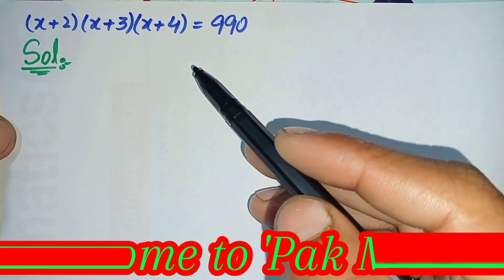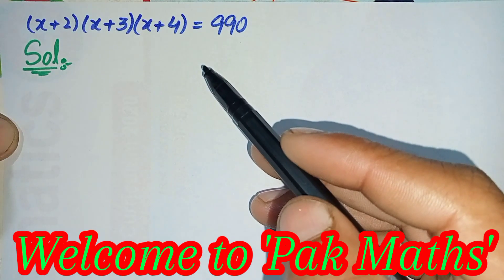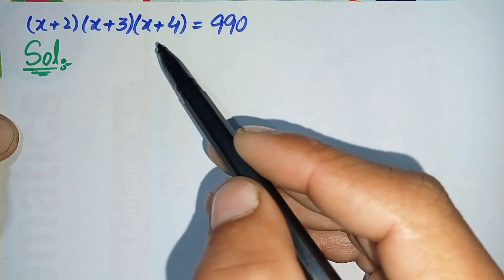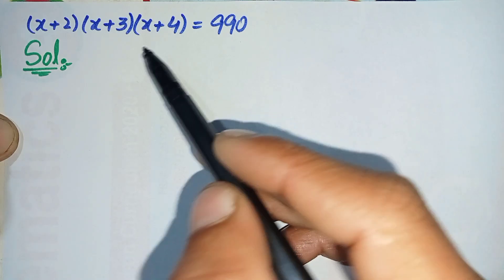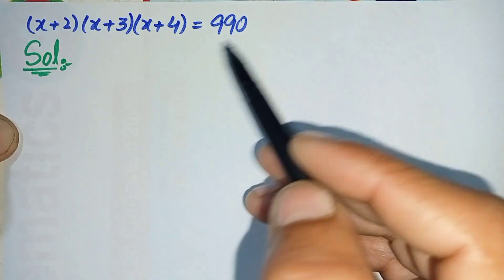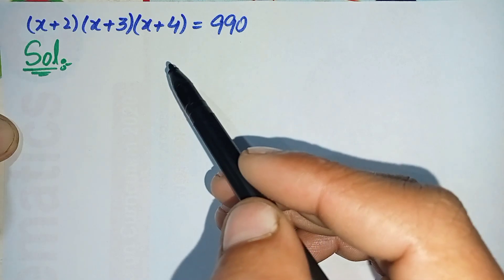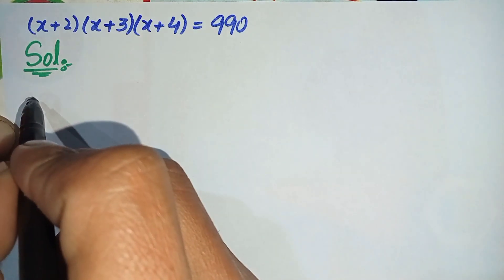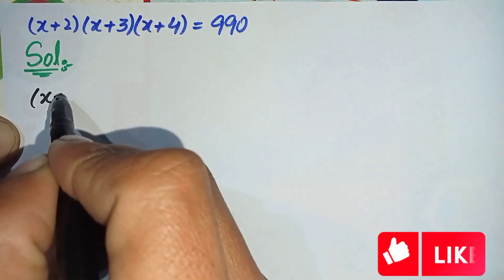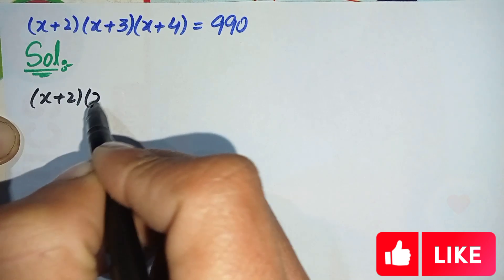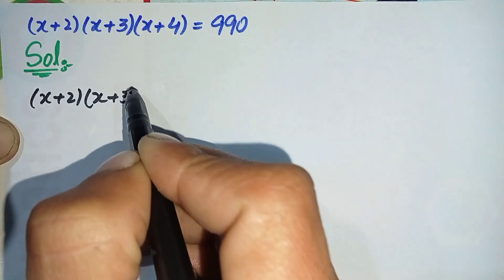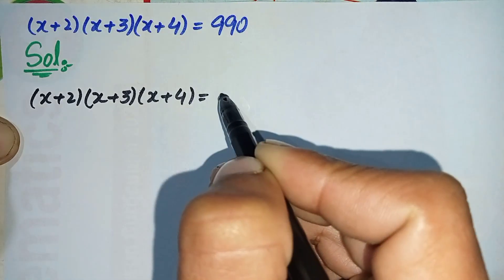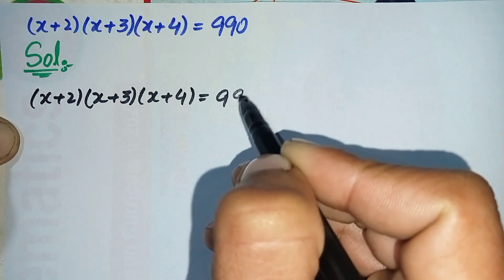Hi everyone, welcome to Park Maths. In this video I'm going to solve this nice algebraic math problem. We will write the solution and rewrite the question, then solve it step by step. The question is: (x+2)(x+3)(x+4) = 990.